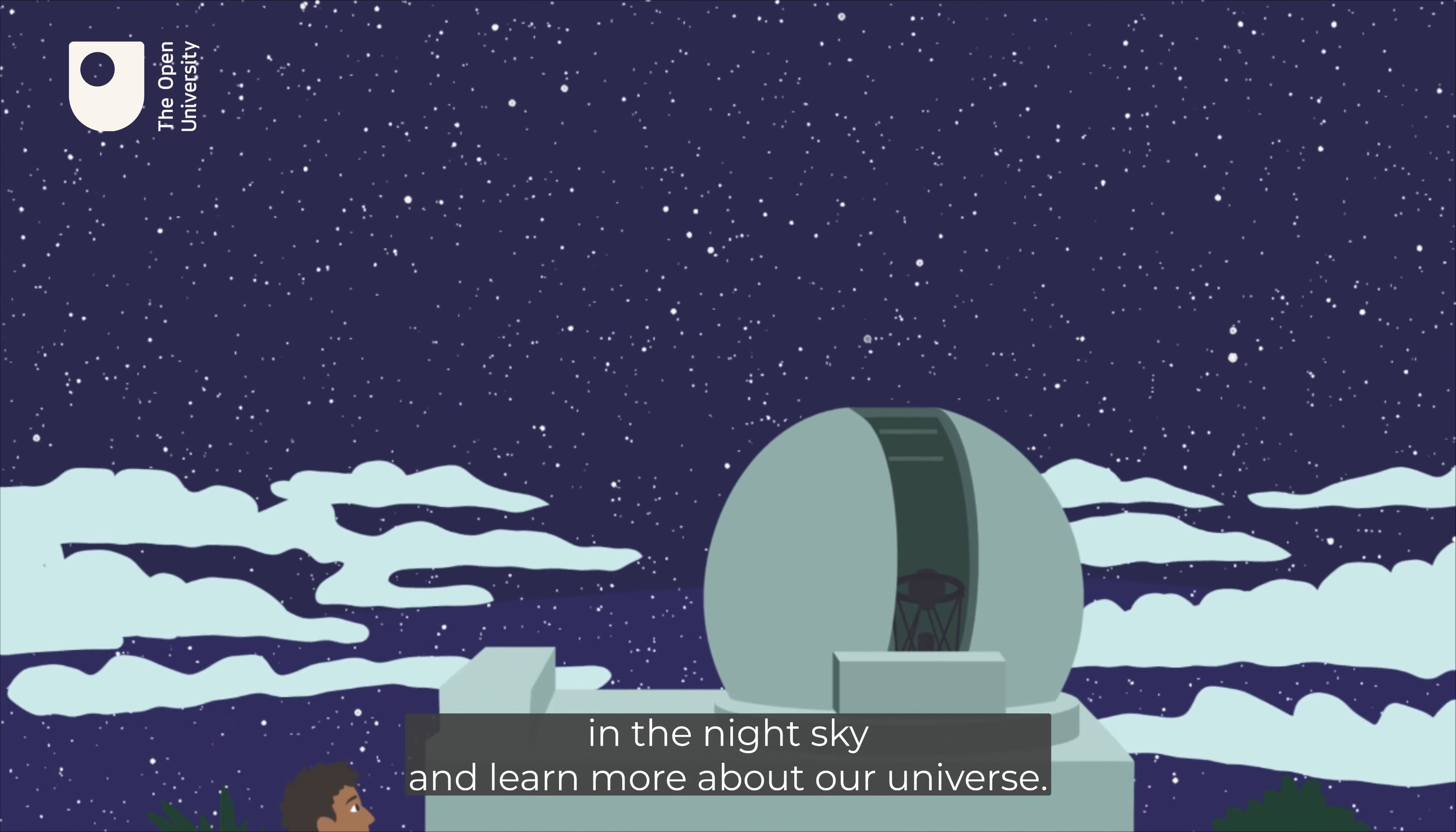Without the help of a digital camera, our eyes alone can only collect light for a fraction of a second before a signal is sent to the brain. Meaning it's very hard for us to see dim objects in the night sky.